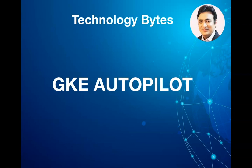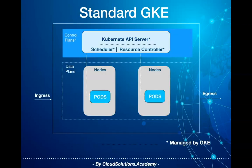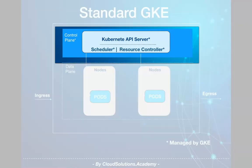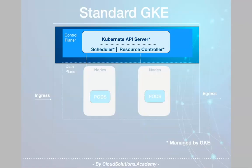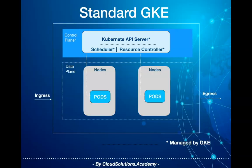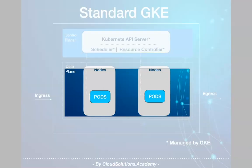Let's first understand what problem GKE Autopilot is trying to solve. A typical managed Kubernetes service like GKE has two components: the control plane and the worker node machines. The control plane manages the cluster infrastructure and the worker nodes. The worker nodes are the virtual machines which host the pods that run the containerized application.